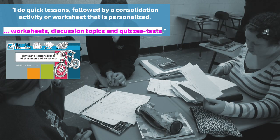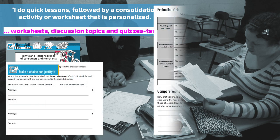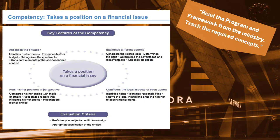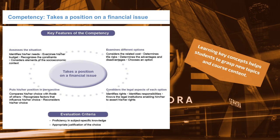Worksheets, discussion topics, quizzes, and tests — this chapter, like so many, features workbooks for students to use and lots to discuss. The single competency in the course remains the focus of evaluation: to take a position on financial issues. An evaluation grid based on the criterion of appropriate justification of the choice is included to check student work. Read the program and framework from the ministry and teach the required concepts, because learning key concepts helps students to better grasp new topics and course content.